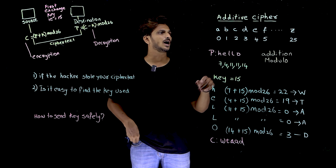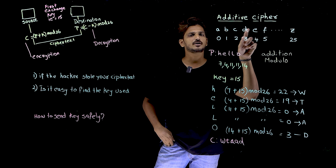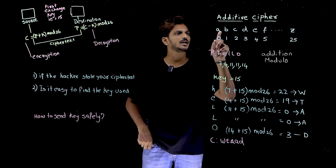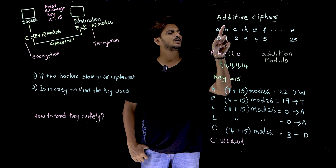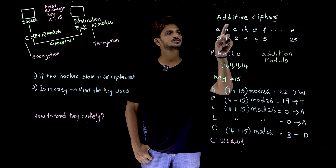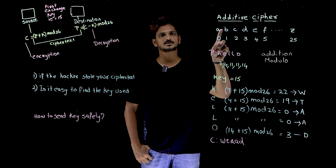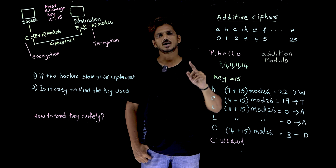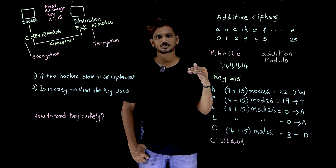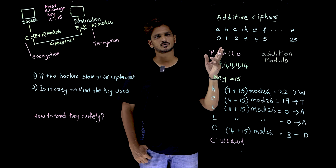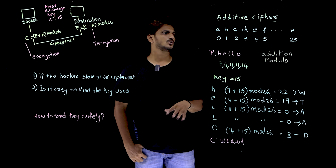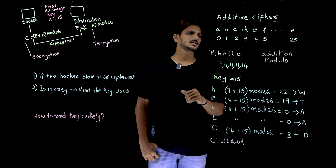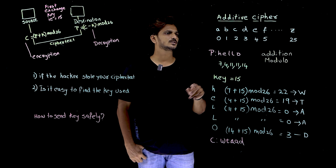Now coming to the additive cipher — this additive cipher, we call it as shift cipher or Caesar cipher. These are the remaining names for additive cipher; you can use any name. So what is the logic here? Let us try to understand.